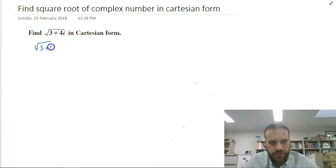If we know that the square root of 3 plus 4i is going to give us a complex number, we can say that the complex number is going to be x plus yi. We just don't know what x is and we don't know what y is yet. Now, if I square both sides I'm going to get 3 plus 4i and I'm going to get x plus yi squared.